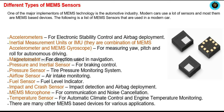The air flow sensor is used for air intake monitoring. The fuel sensor is used as a fuel level indicator. The impact and crash sensor is used for impact detection and airbag deployment. The MEMS microphone is used for communication and noise cancellation. The temperature sensor is used for automatic climate control and engine temperature monitoring.